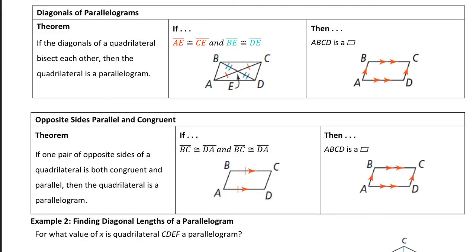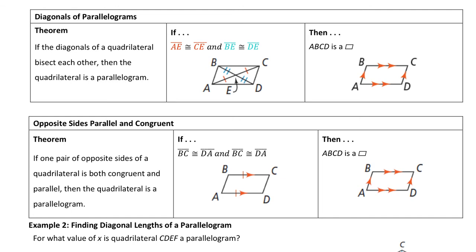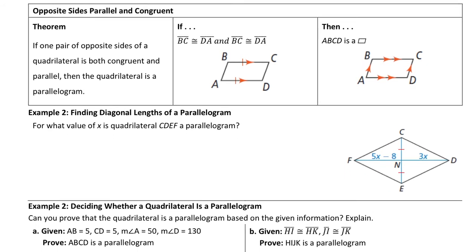Moving ahead, we have another property: the diagonals of a parallelogram. This theorem states that if the diagonals of a quadrilateral bisect each other, then the quadrilateral is a parallelogram — diagonals must bisect each other. The last theorem is new: if one pair of opposite sides of a quadrilateral is both congruent and parallel at the same time, then that quadrilateral is a parallelogram. You look for the congruent symbol and the parallel symbol on the same pair of opposite sides.